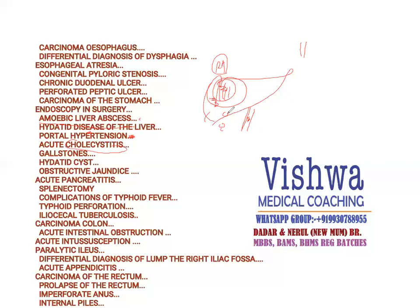Acute cholecystitis — gallstone is the most common cause. Remember, it can be calculus and acalculous. Murphy's triad and Murphy's sign are also present. We go for medical treatment first, then can proceed to cholecystectomy. Gallstones: three types — bilirubin gallstones, pigment gallstones, and cholesterol gallstones. Obstructive jaundice occurs because gallstones obstruct the biliary pathway, producing an increase in conjugated bilirubin.